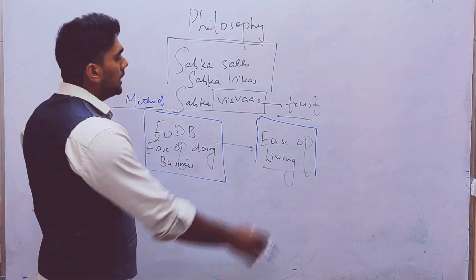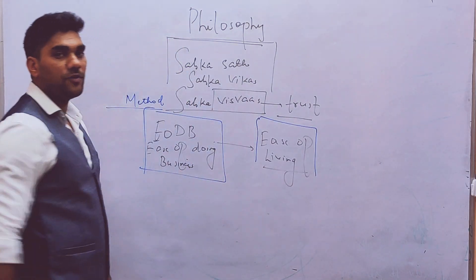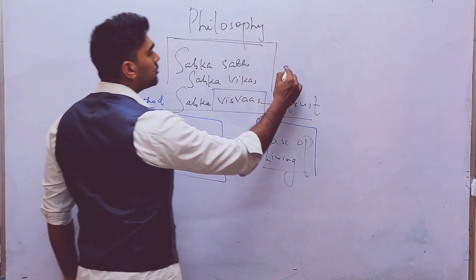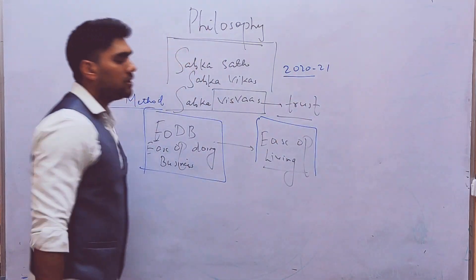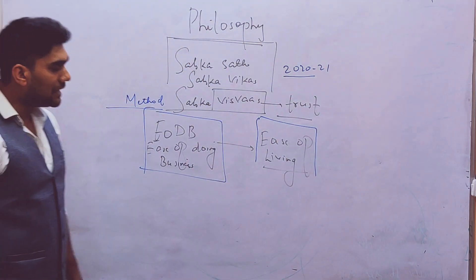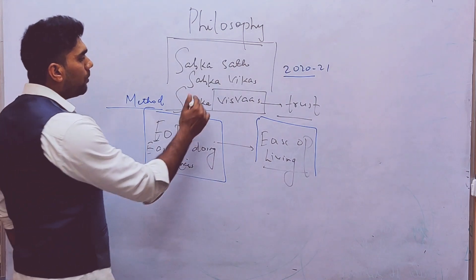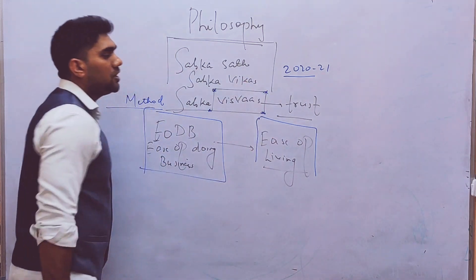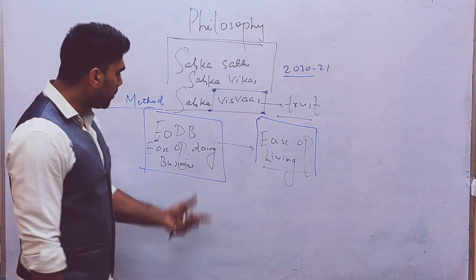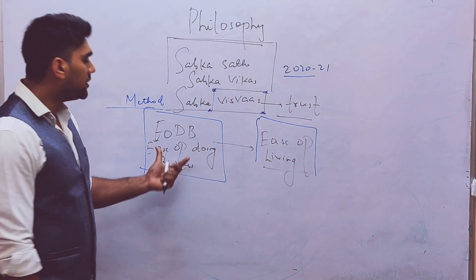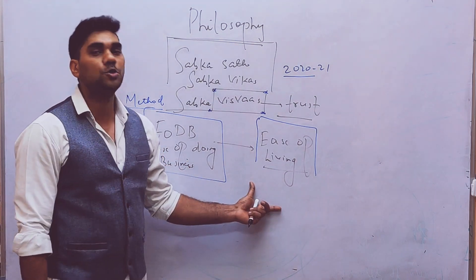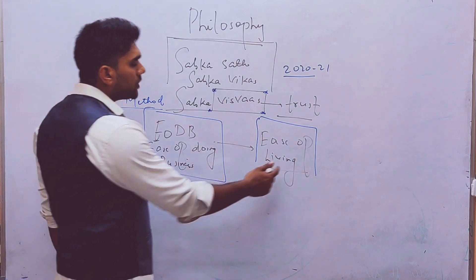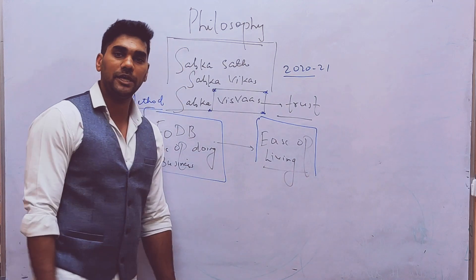Because the business will generate the resources and with the resources we will try to generate the standard of living. So that is why I can say with all these slogans and philosophy, the main philosophy of the government budget 2020 and 2021 is ease of living. And that is why the government is talking about there is a need of trust in the policies of the government.